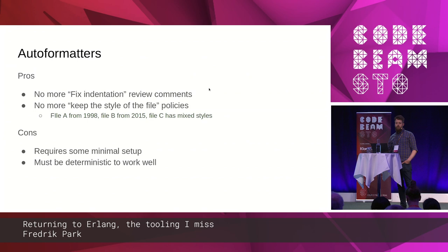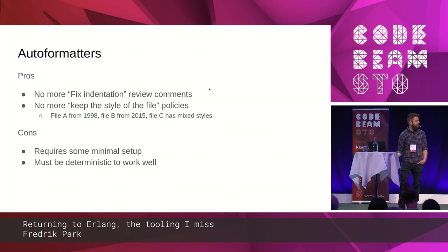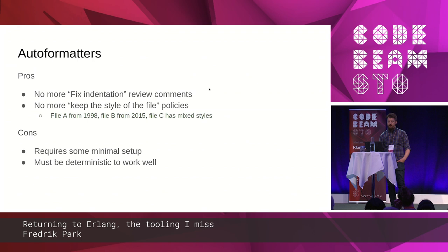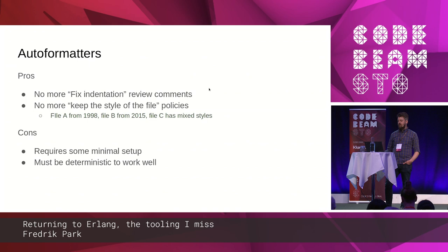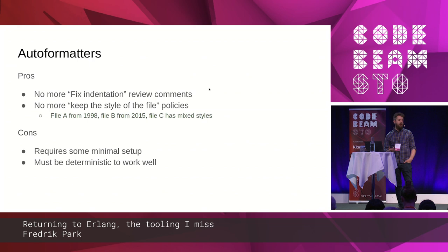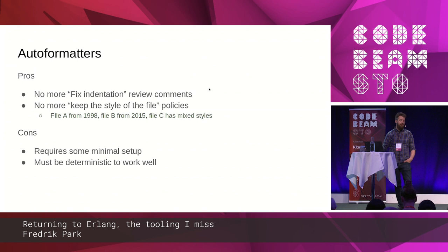What I want to do here is present some tooling and some workflow that I haven't been using in my previous lines of work — things we miss that we don't really have in Erlang. The first one is that we don't really have a good auto-formatter. The tooling made really popular by Go with Go format, and Rust has its own Rust format, which is really good and really strict. What you gain from having an auto-formatter is that you get rid of all these nasty fix-your-indentation reviews and get a consistent style through the whole repository. I've seen fun examples where file A uses the style that was used in 1998, where you keep the style of the file so that it doesn't become messed up.